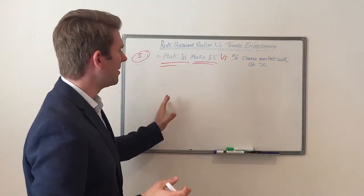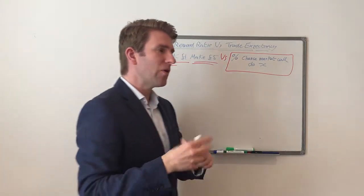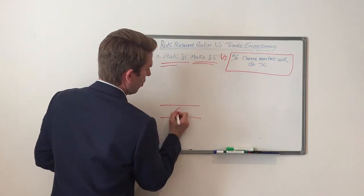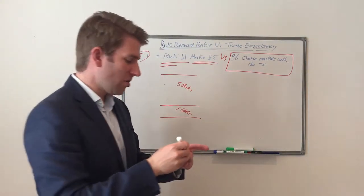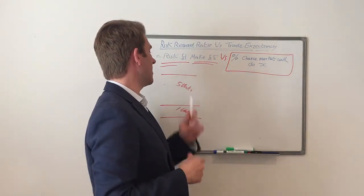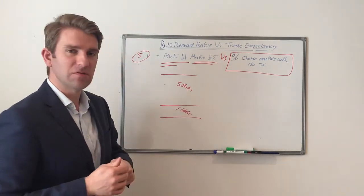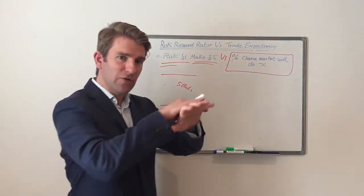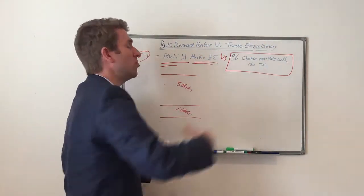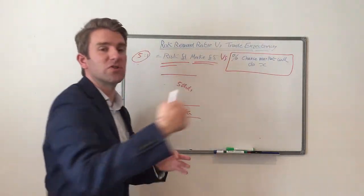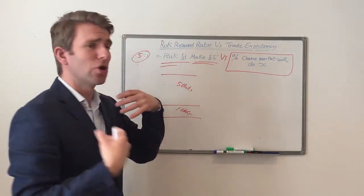However, what is not talked about is this thing here: the percentage chance the market is going to do what you want it to do. It's all very well saying here's my entry point, here's my risk of one unit, here's my target of five units — I've got a five-to-one risk-reward ratio. But in the real world, that is only going to happen one out of five times, because the chances of the market moving five times in one direction versus one time in the other — from a purely neutral perspective — that's a break-even proposition.